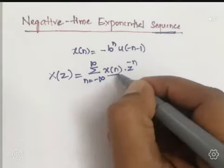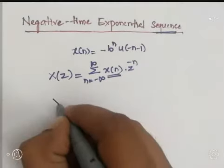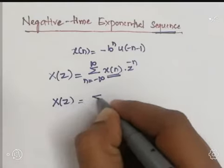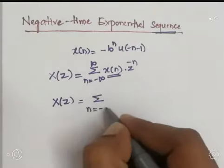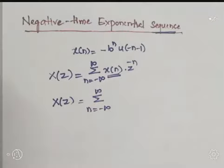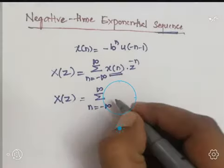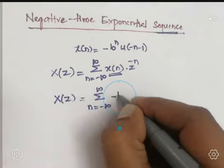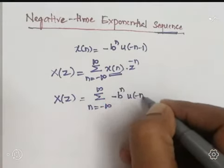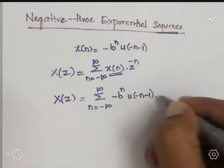In this definition I am going to substitute the value of X(n). That is, X(Z) = summation from n = -∞ to +∞ of [-B^n · u(-n-1)] multiplied by Z^(-n).